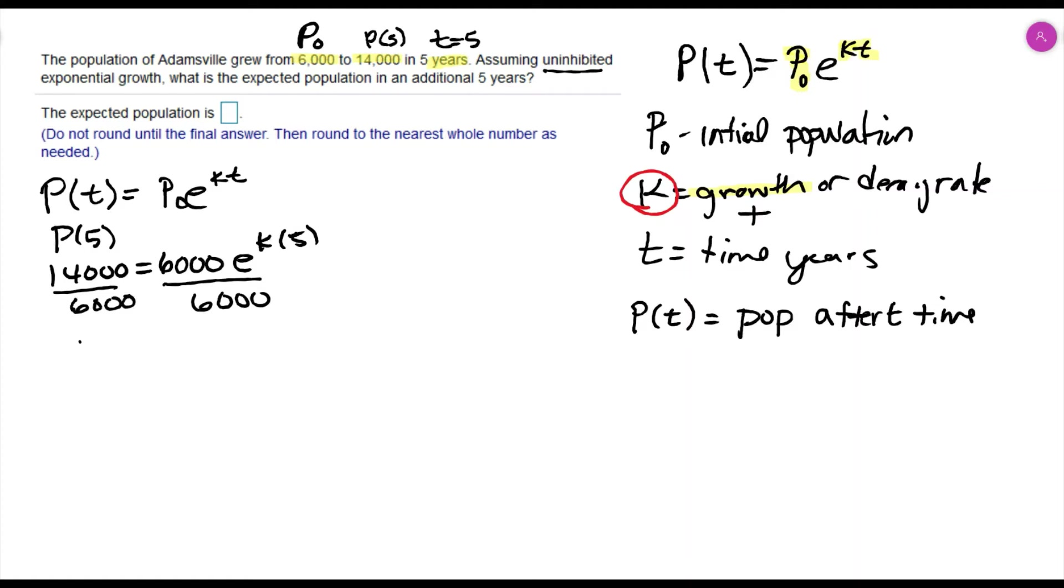That would reduce to 14 over 6. The 6,000s cancel from the right, giving me e to the 5k. 14 over 6 reduces down to 7 over 3. Then I can solve this exponential equation by taking the log of both sides—I'm taking the natural log of both sides.